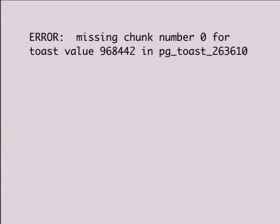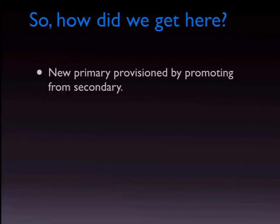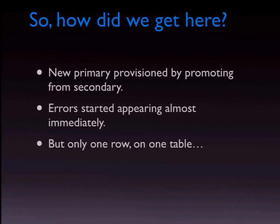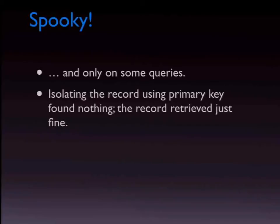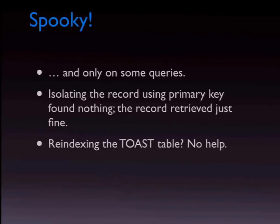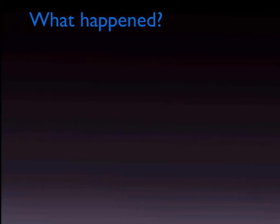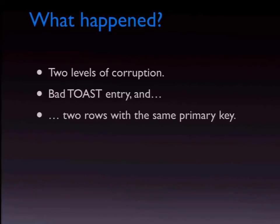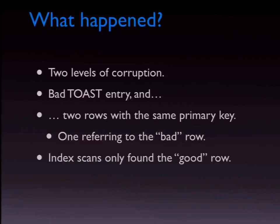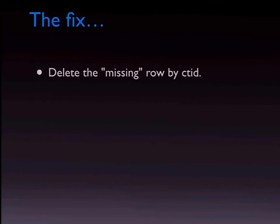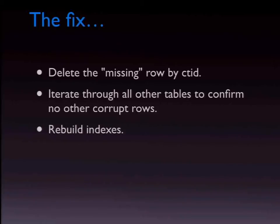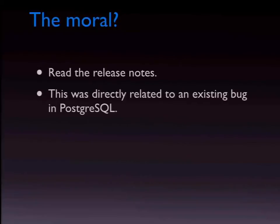Another case study: errors started flying out, queries failing. A new primary was provisioned by promoting from secondary, and these errors started popping out almost immediately — but only on one row in one table, and only on some queries, not every query. Isolating the record using the primary key was fine — the record retrieved fine. Re-indexing the TOAST table didn't solve it. But iterating through the table using PL/pgSQL, we found it: two levels of corruption — a bad TOAST entry and two rows with the same primary key. One pointed at the bad row; index scans only found the good row, but sequential scans found both. We solved it by deleting the bad row by CTID. Read the release notes — this was actually caused by a Postgres bug, and the hosting provider hadn't upgraded Postgres.